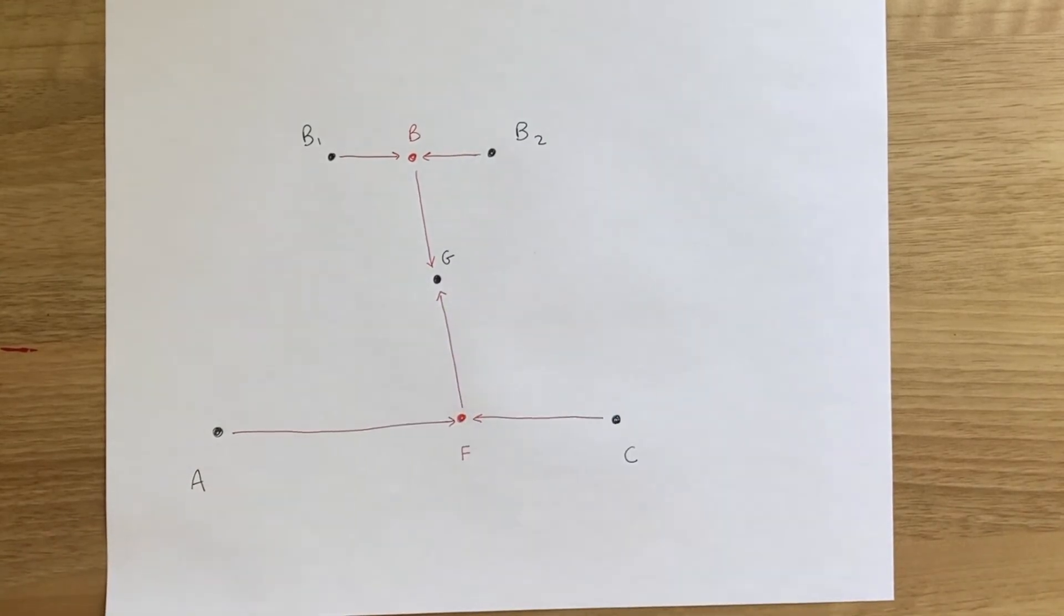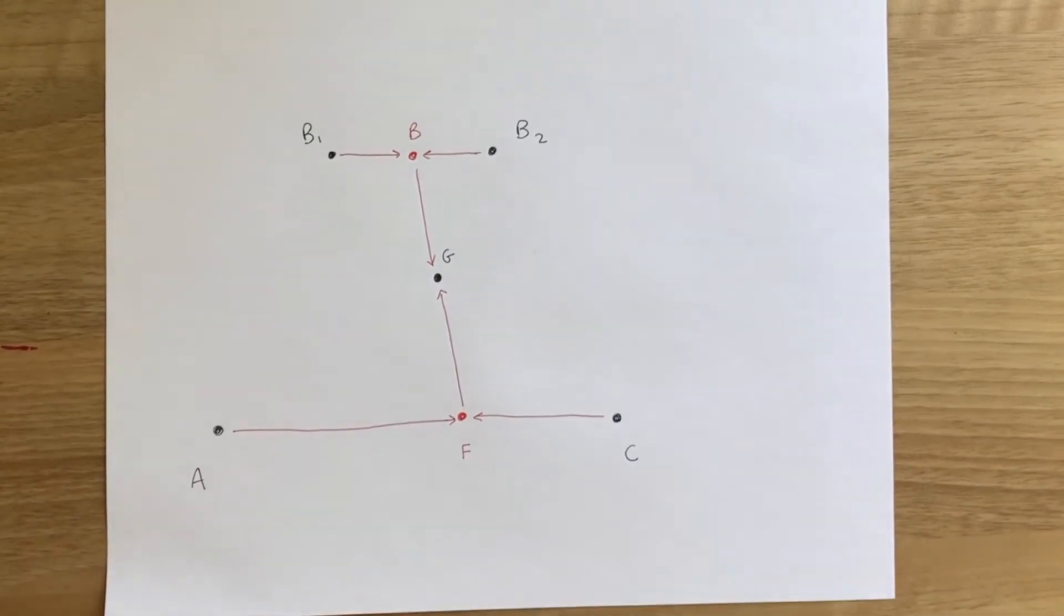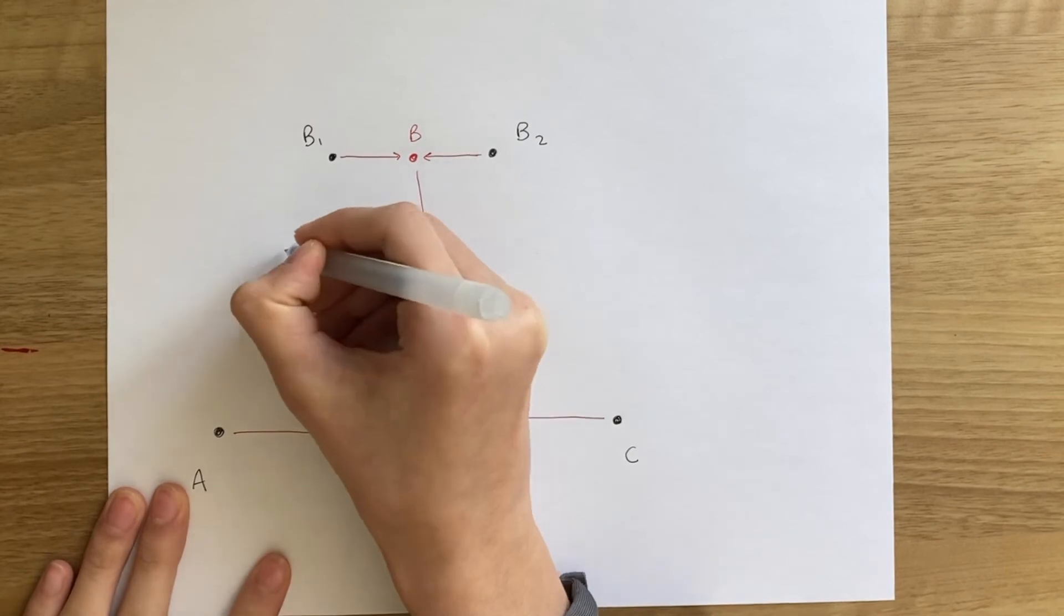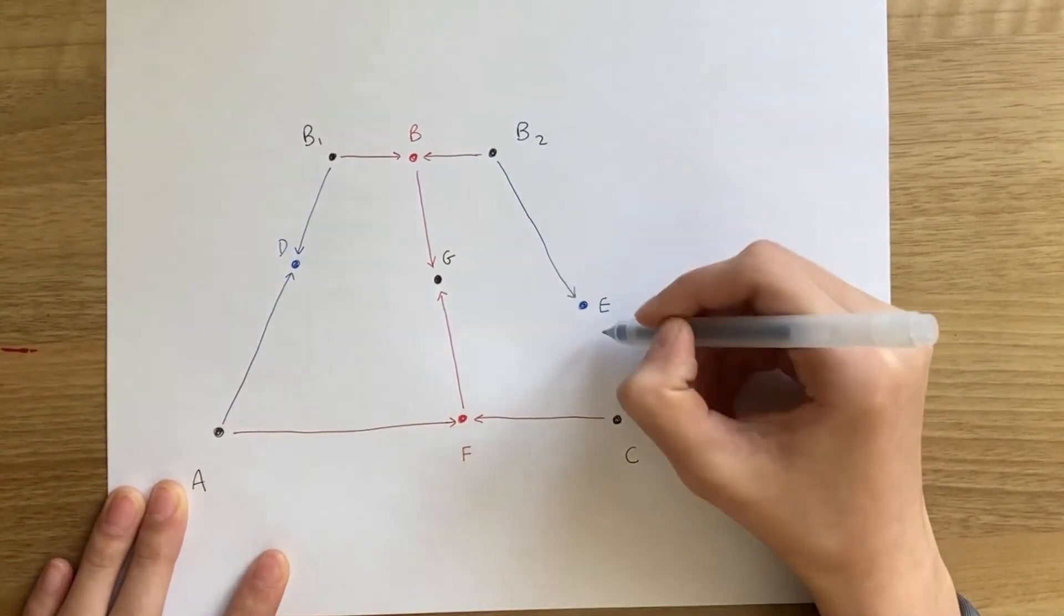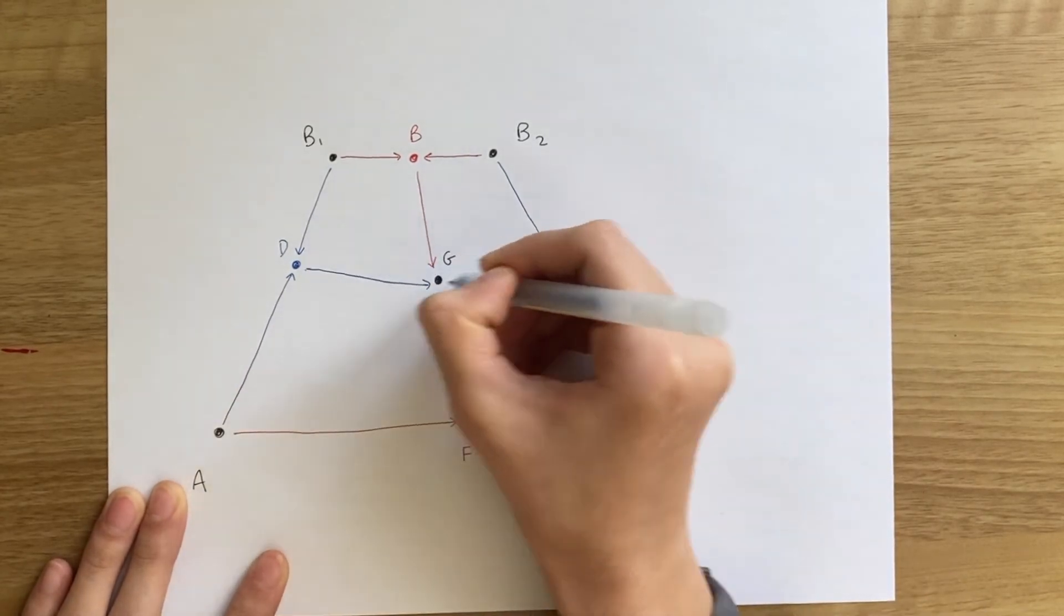But what if we did the other side first? Let's say the center of A and B1 is D, and the center of C and B2 is E. Then G is also the center of D and E. We'll be using this soon.